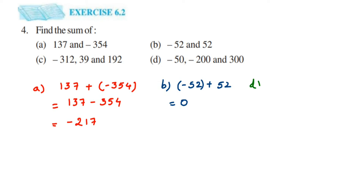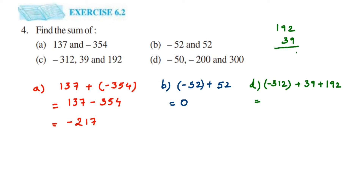The next one has three integers: -312, plus (-39), plus 192. To solve this, we are first going to add the positive numbers — that is, the last two numbers, both positive integers. So 192 + 39: 9 + 2 = 11, carry 1, giving us 231.